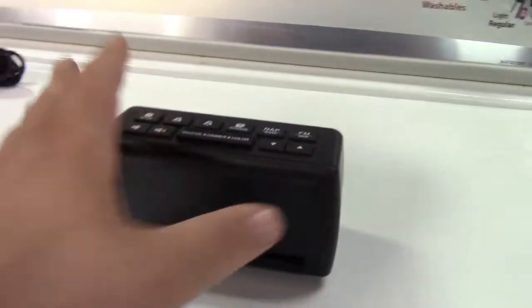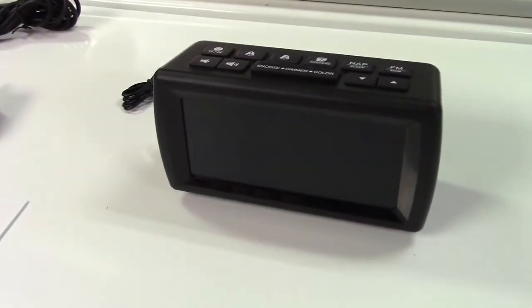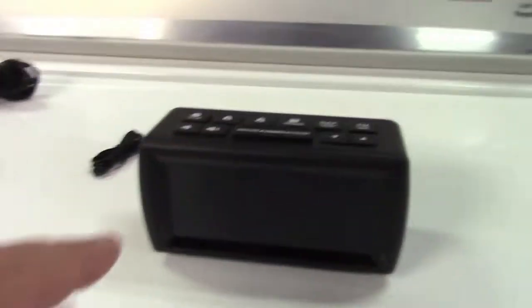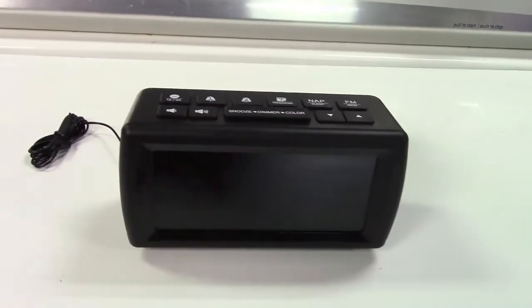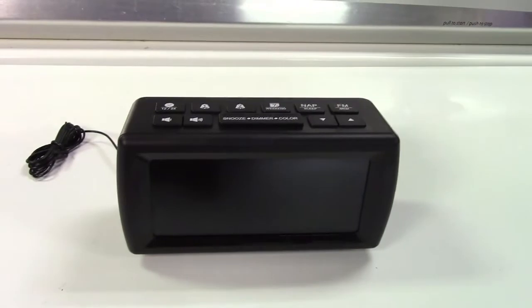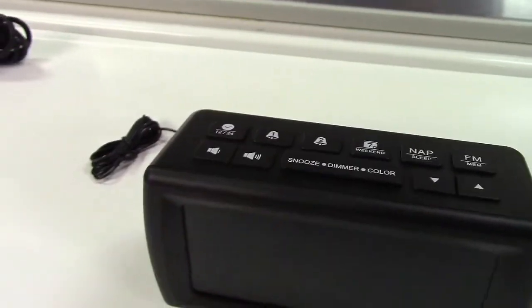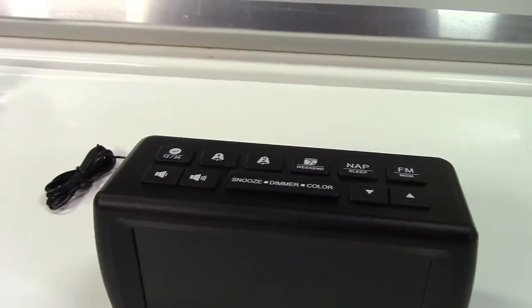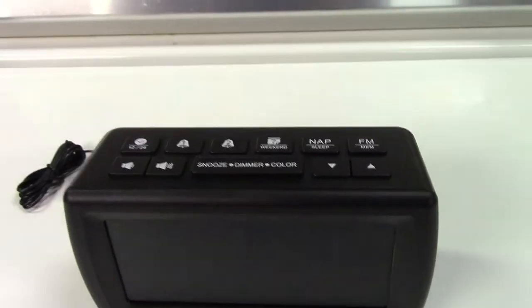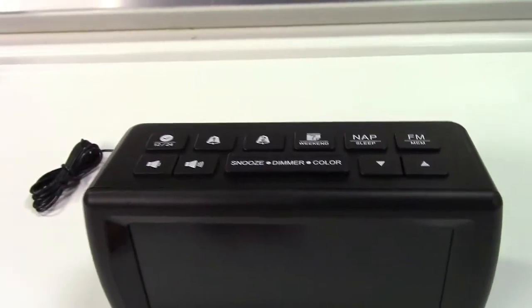Now, the clock, like I said, is a clock radio. It does FM radio, and the display can light up in any of seven different colors and has five different brightness levels. You have two different alarm settings right here. You have a snooze button. You have a nap timer, which I'll get into later, and a bunch of other features as well.